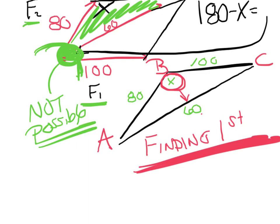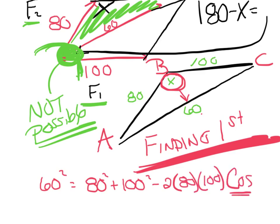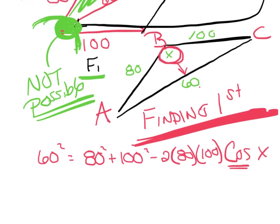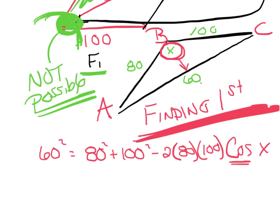Finding comes first, so that's my 60 squared equals. Now I just grab my other two sides. 80 squared plus 100 squared minus 2 times the same two numbers, 80 and 100. And remember, it's law of cosines. Make sure you use cosine of x.